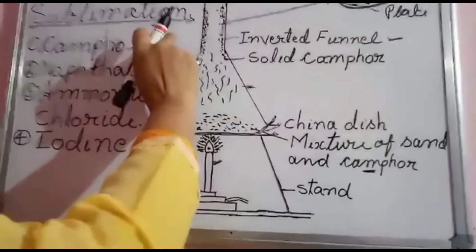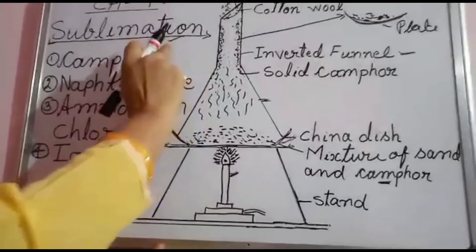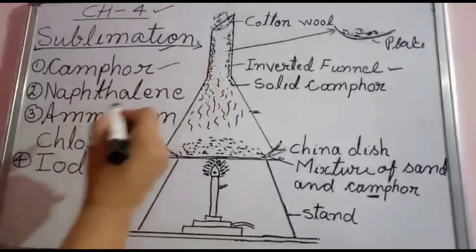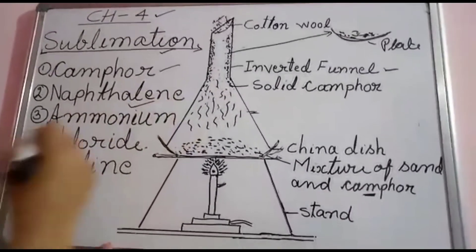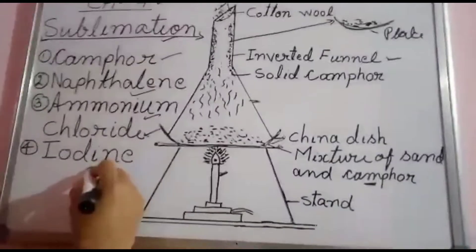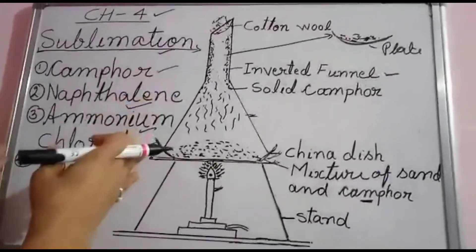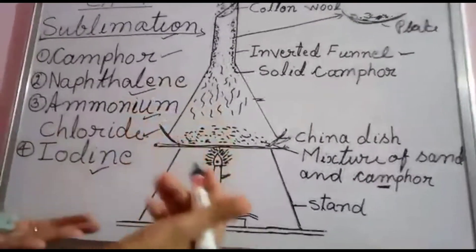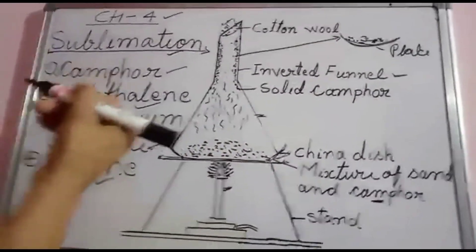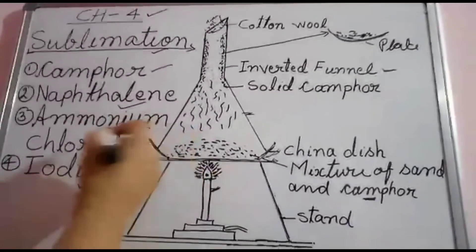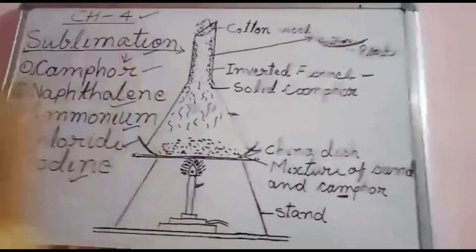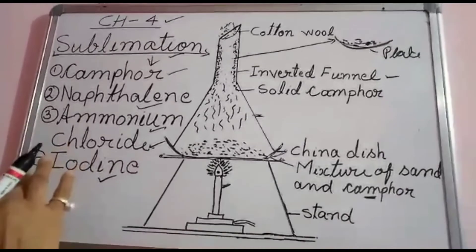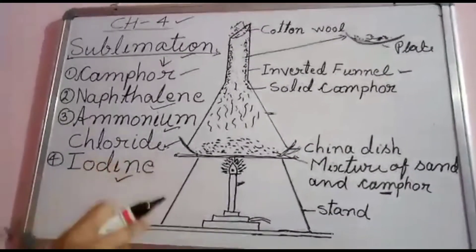The activity is clear. You will draw this diagram in your copy. The process of separation going on here is sublimation. The materials that get separated by this process are: camphor, naphthalene, ammonium chloride, and iodine. These four materials get separated from mixtures — such as sugar and naphthalene, or salt and camphor — by sublimation method.